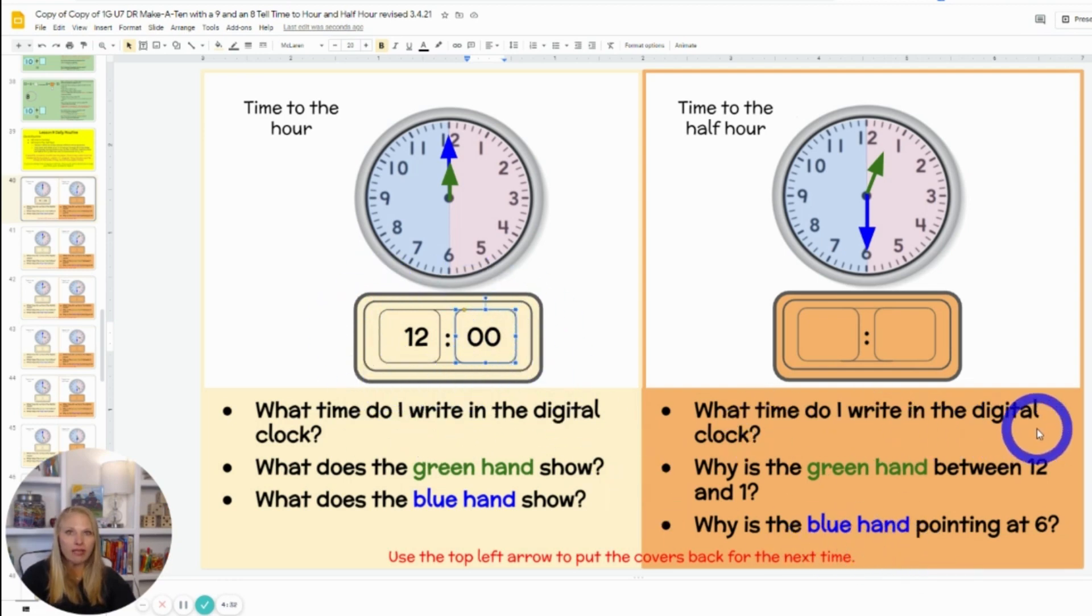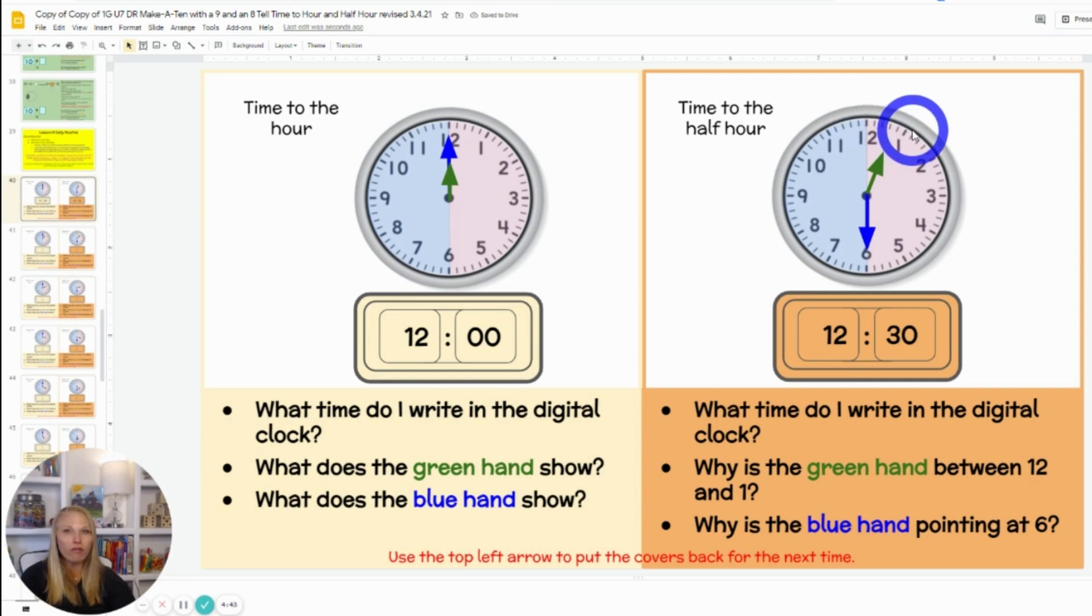What time do I write in the digital clock? Think about it. Thumbs up when you know. Class, 12:30. Why is the green hand between the 12 and the 1? Think about it. Whisper to your neighbor why it's between the 12 and the 1. Class, Sarah or whoever, right? Because it's halfway between 12 and 1, which means it's halfway between the hours of 12 and 1. When we make it to 30, we're halfway around the clock. So any variation of that you can accept.